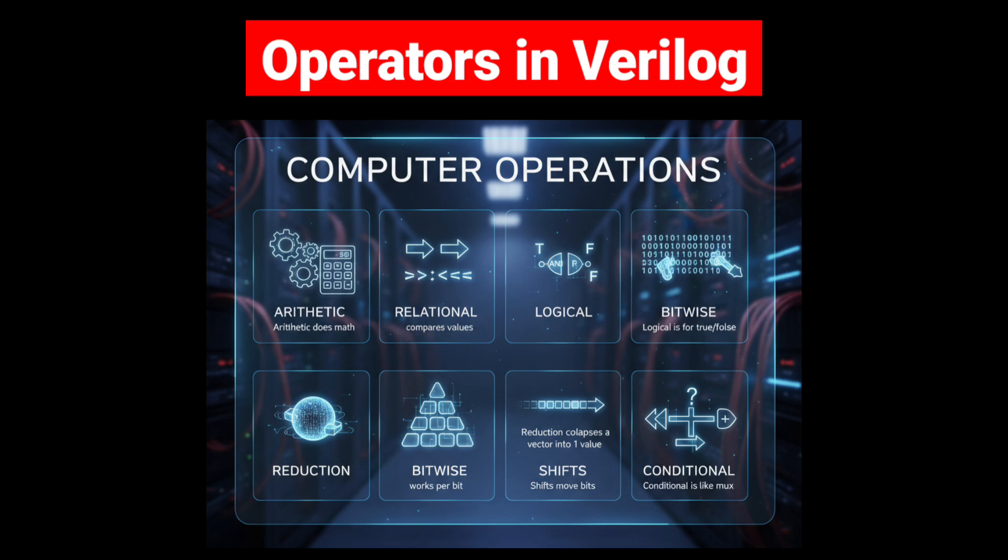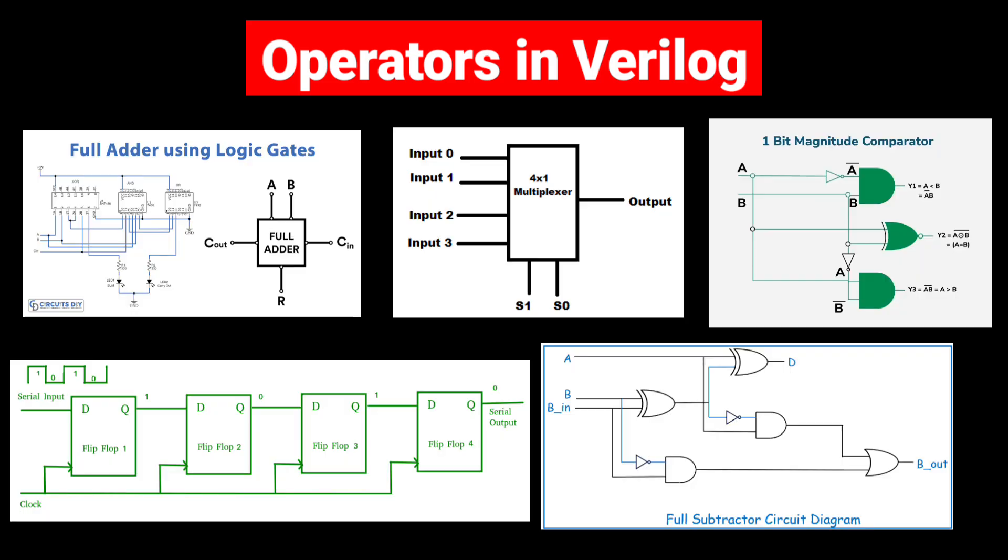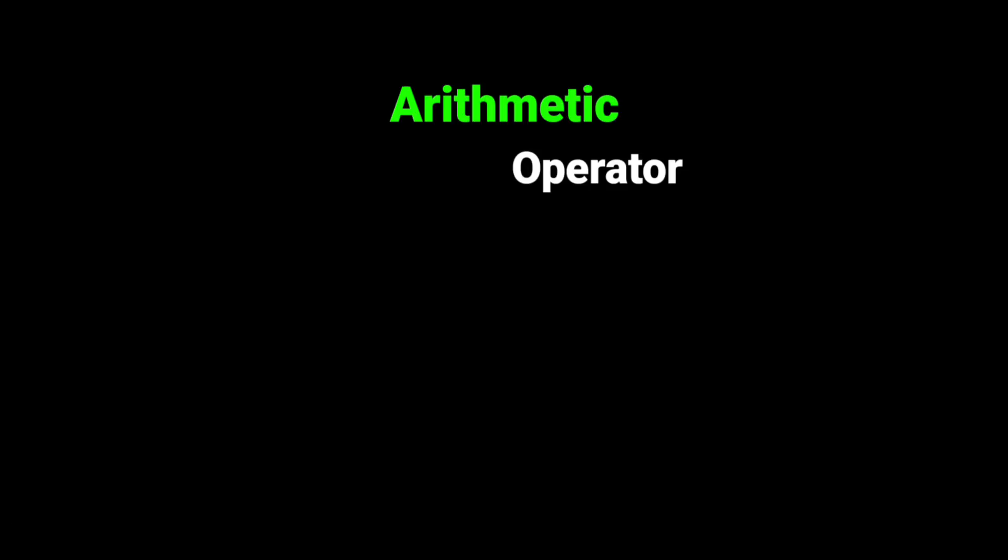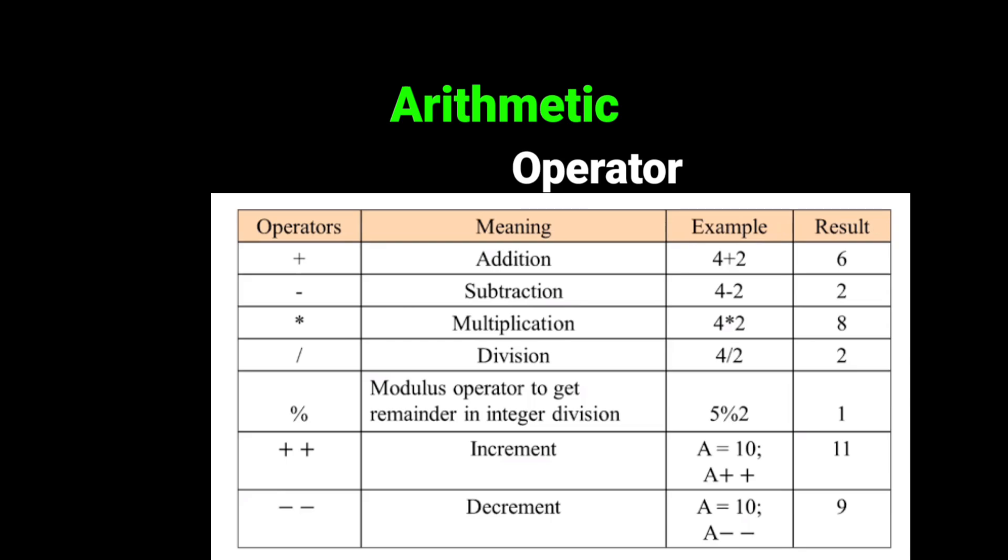In Verilog, operators are symbols that perform specific operations on operands like numbers, signals, or expressions. They are very important because almost every circuit you design—adders, multiplexers, shifters, comparators—depends on operators. First one is Arithmetic Operators. These are used for basic math operations like addition, subtraction, multiplication, division, and modulus.